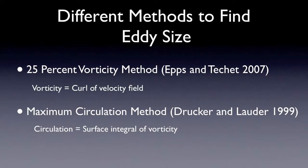Here are the two methods that we used to find eddy sizes. One method is called 25% vorticity method, which is based on the paper by Dr. Epps and Dr. Techek. And the other method is called maximum circulation method, which is based on the paper by Dr. Drucker and Dr. Lauder.